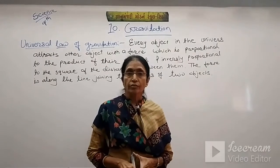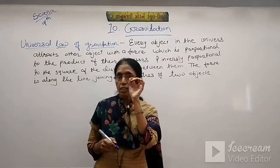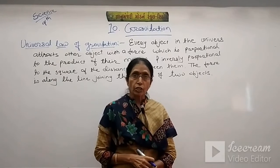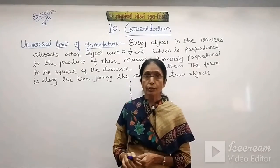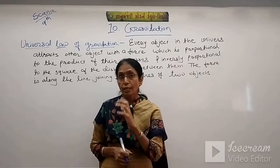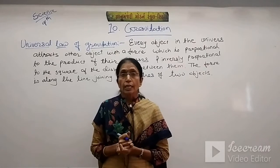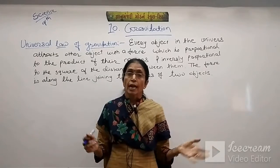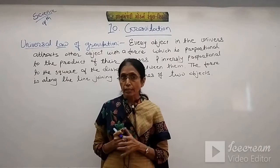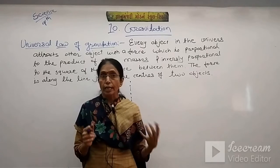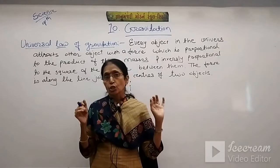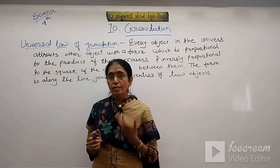In this chapter, in the previous session, we have learned about what gravitation is — it is a force which attracts objects to each other. We also discussed the universal law of gravitation: any two objects in the universe attract each other by a force, and that force is directly proportional to the product of their masses and inversely proportional to the square of the distance between their centers.